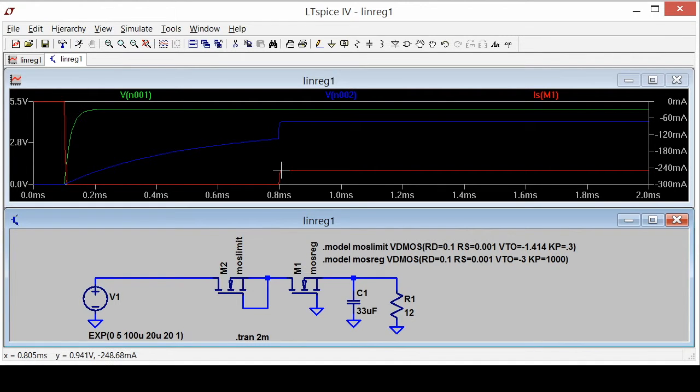Now you can see, it used to go to 6 amps of current, and now it only goes to 0.3 amps, because that's the current limiting that I set right here.